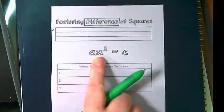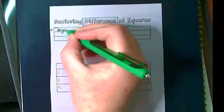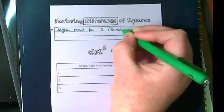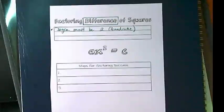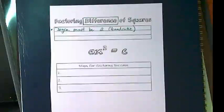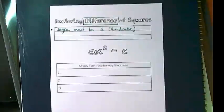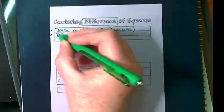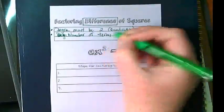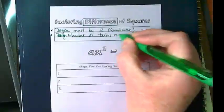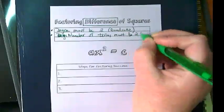There are four definitions for a difference of squares. First, the degree must be two, meaning it's a quadratic. Second, the number of terms must be two, meaning it's a binomial.